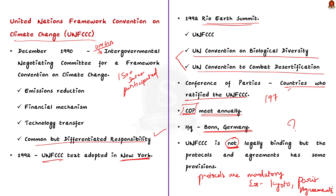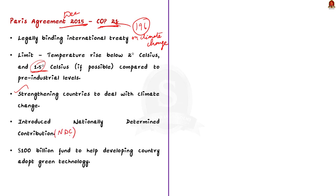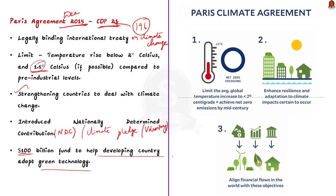The Paris Agreement was adopted by 196 countries at COP21 held in Paris in December 2015. It is a legally binding international treaty on climate change. Through this agreement, nations agreed to limit global warming to well below 2 degrees Celsius, preferably to 1.5 degrees Celsius. It also introduced the concept of Nationally Determined Contributions, or NDCs — climate pledges made by countries that are totally voluntary. It also includes a provision requiring developed countries to send 100 billion dollars annually to their developing counterparts to help with emission reduction measures.